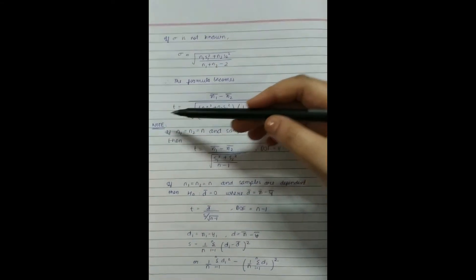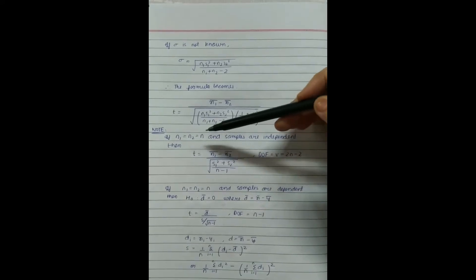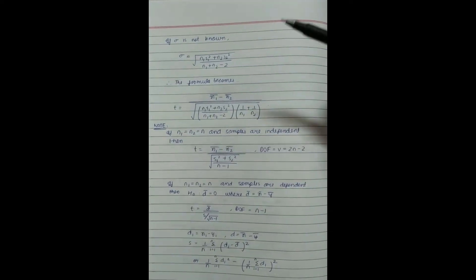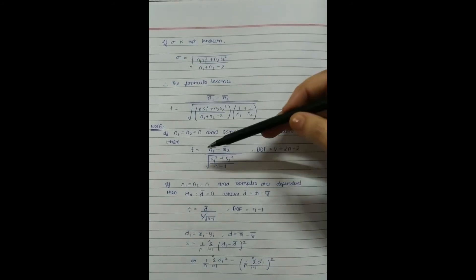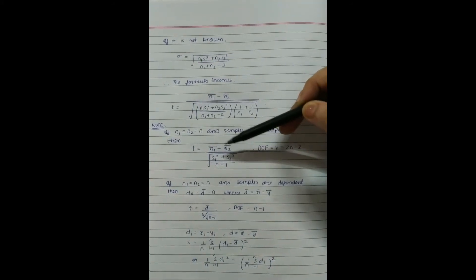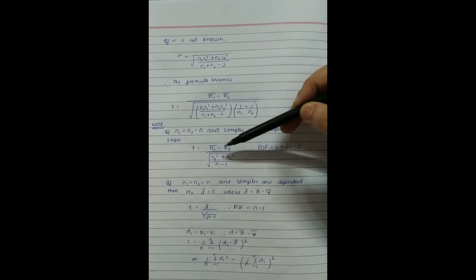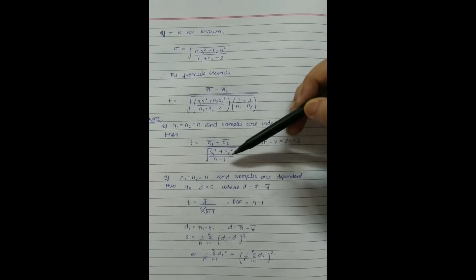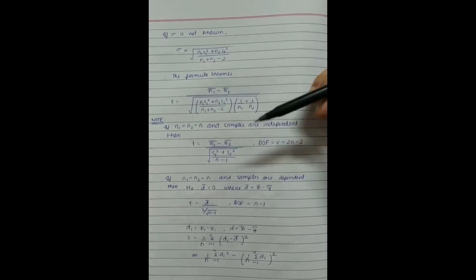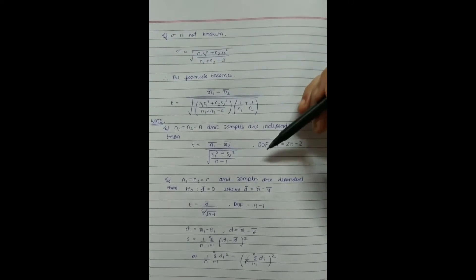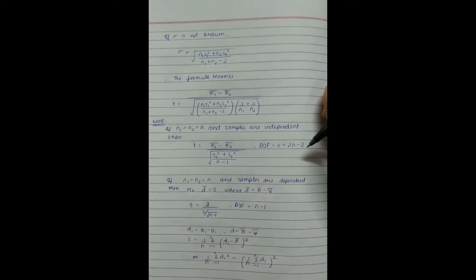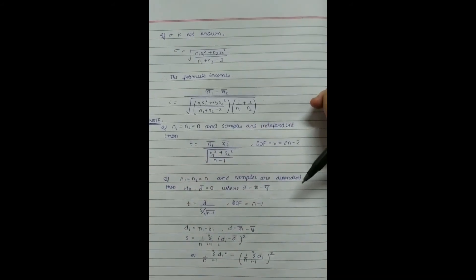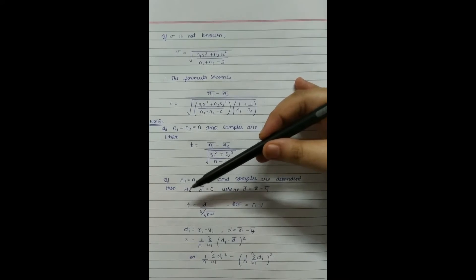If n₁ = n₂ = n, that is, when the samples are independent and equal in size, we use the formula: t = (x̄₁ − x̄₂) / √[(s₁² + s₂²)/(n−1)]. The degree of freedom in this case is 2n − 2.